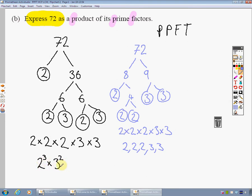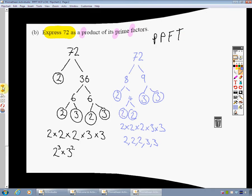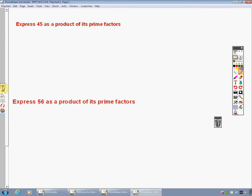Remember the key to finding the question is the PPF. And when you see PPF I always think PP find the tree. Product of prime factor tree. Really helps you do it. OK. I've got 2 questions here for you to do. Express 45 as a product of its prime factors, and then express 56 as a product of its prime factors. If you'd like to press pause now.